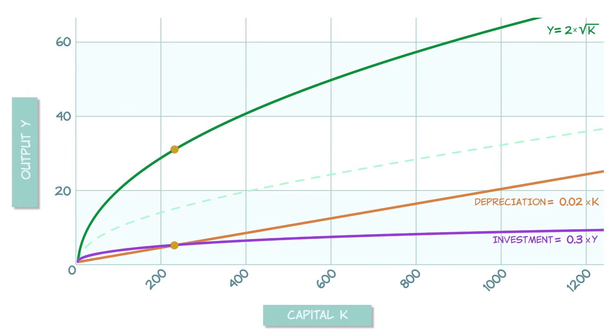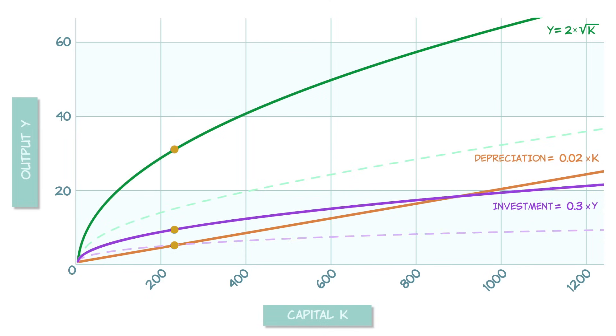When output doubles, so does investment. Now, once again, investment is greater than depreciation. So we begin accumulating capital once again, and that further boosts our output.